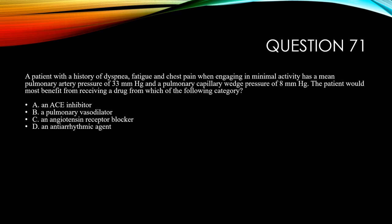Question 71. A patient with a history of dyspnea, fatigue, and chest pain with minimal activity has a mean pulmonary artery pressure of 33 torr and a pulmonary capillary wedge pressure of 8. The patient would most benefit from which of the following drug categories? A, an ACE (angiotensin-converting enzyme) inhibitor. B, a pulmonary vasodilator. C, an angiotensin receptor blocker. And D, an antiarrhythmic agent.